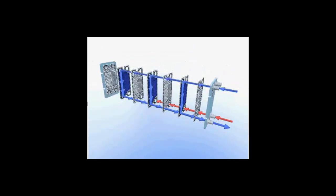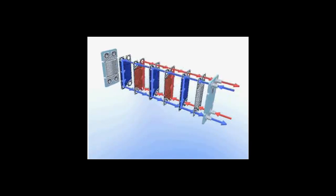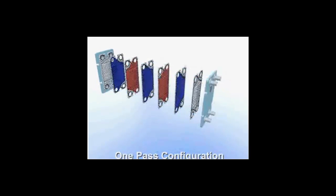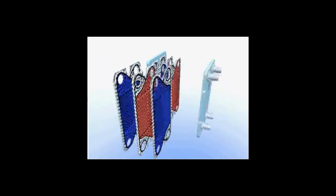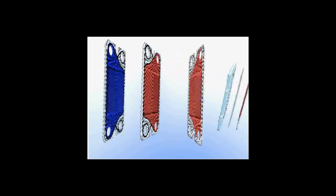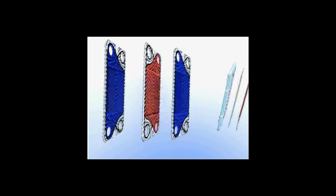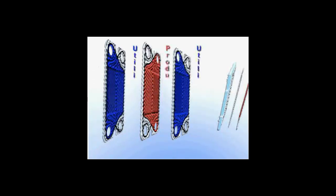Plate and frame heat exchangers consist of a series of plates held together with a frame. Each plate is the boundary where heat transfer occurs between hot and cold fluids. The spaces between plates are called channels.